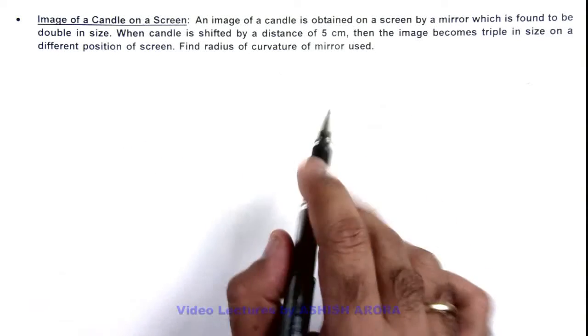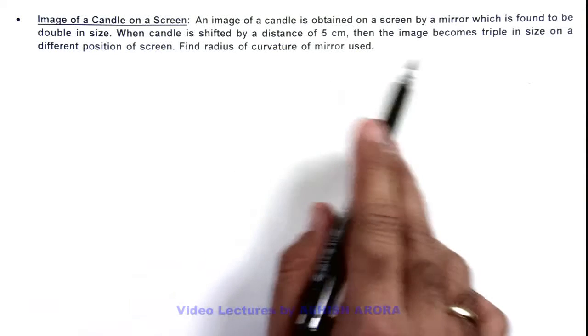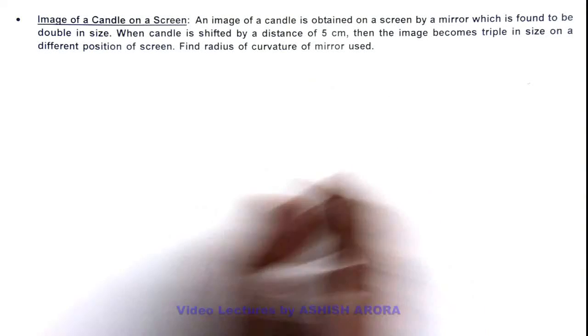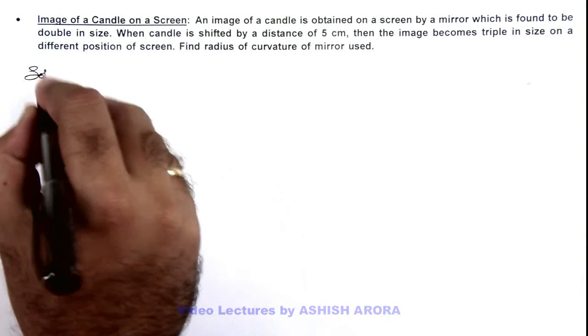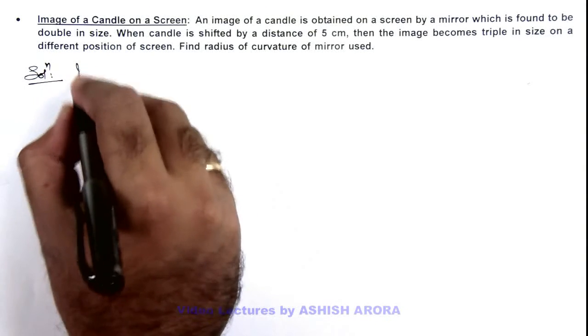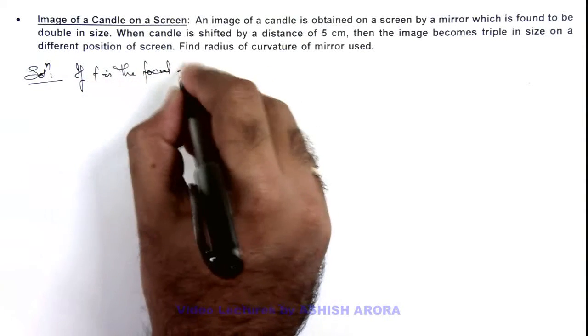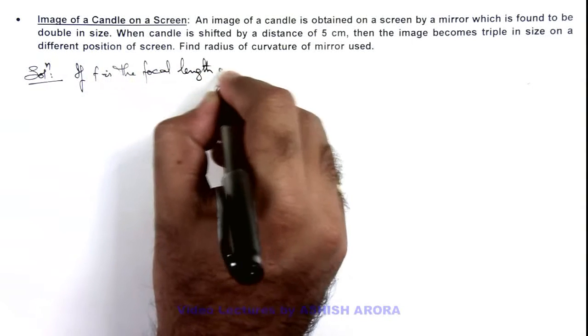Here we can see as the image is obtained on screen, that means the image is real, so the mirror must be a converging mirror. In this situation, we can directly write if f is the focal length of the mirror.